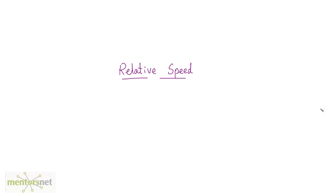Hey everyone, in this video we are going to talk about relative speed. So what is relative speed? Imagine that you are traveling on a train and there is another train running by the side of your train and both the trains are running at the same speed. The other train will appear to you as a stationary object, because both of you are traveling at the same speed. So that is relative speed.